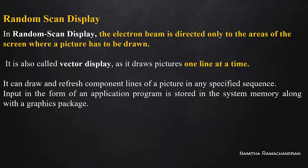In raster scan, there is a horizontal and vertical retrace. We store the pixel intensity values one after another, starting from the left top corner. The video controller unit stores the pixel intensity values at the corresponding horizontal points.